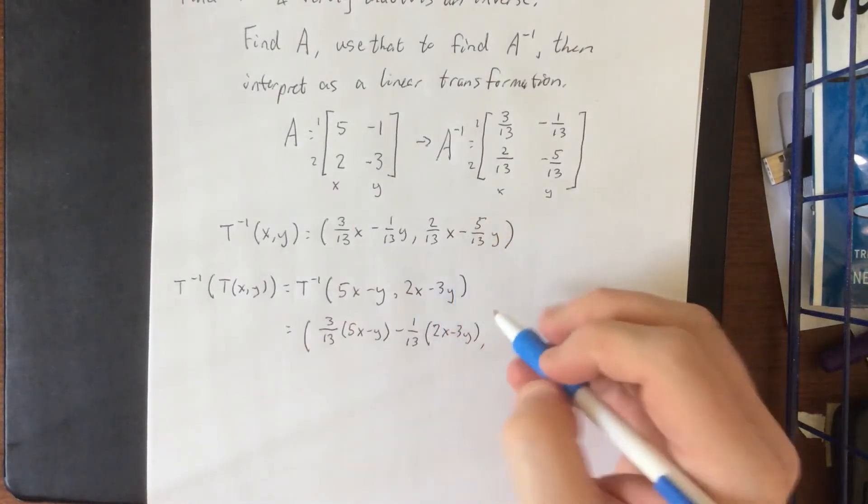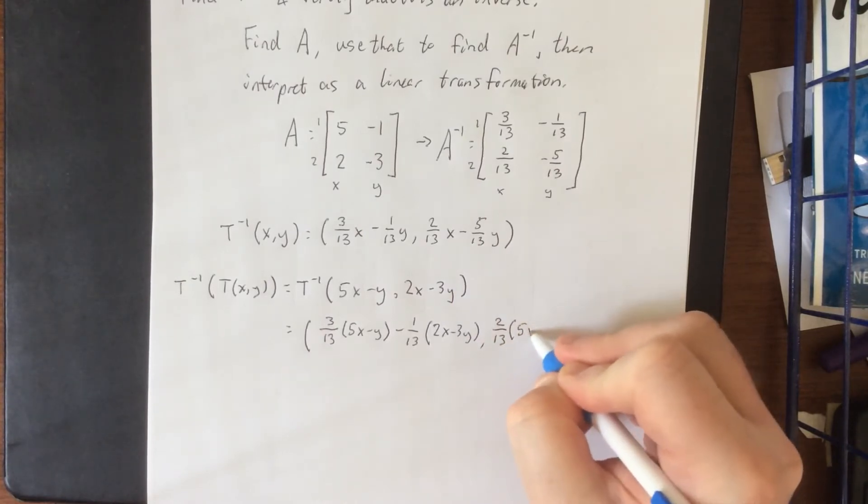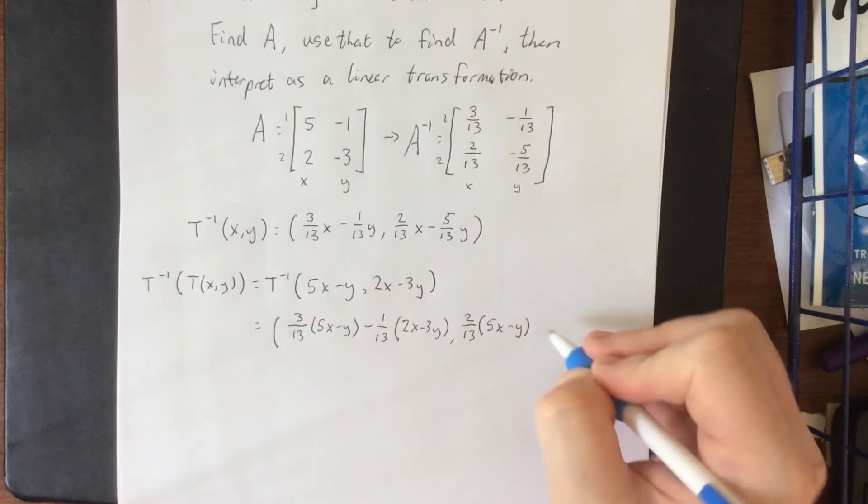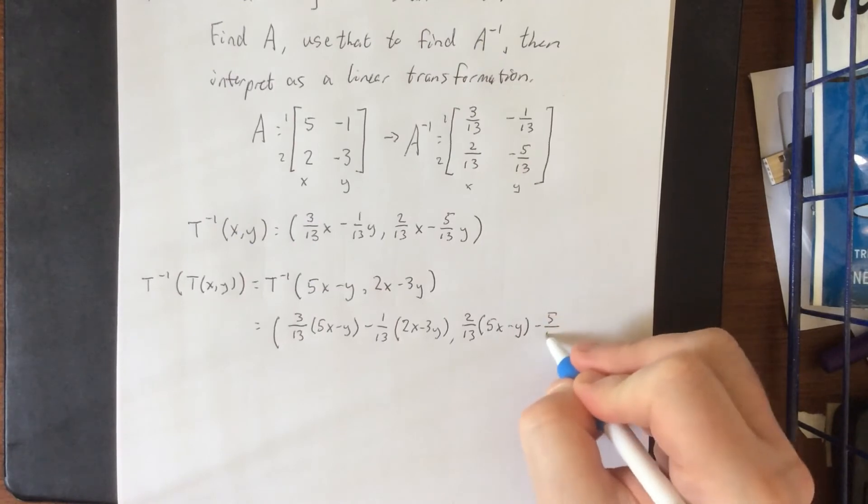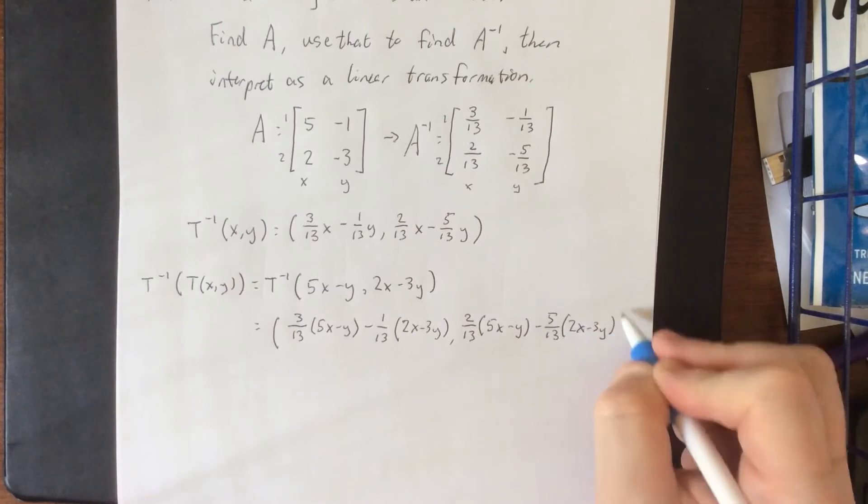Then for the second component we'll be taking 2/13 of the first component, which is 5x minus y, minus 5/13 of the second component, which is 2x minus 3y.